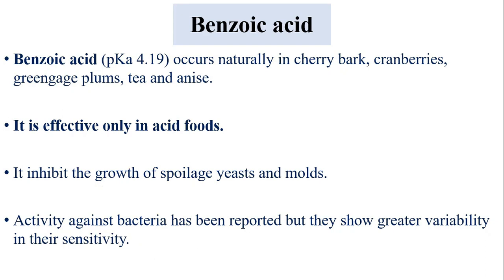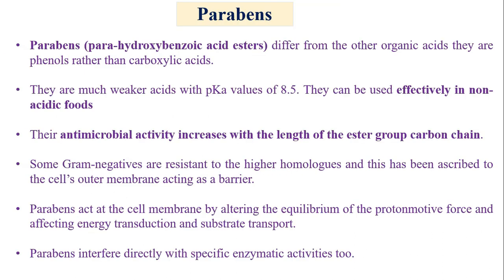Benzoic acid (E210) occurs naturally in cherry bark, cranberries, greengage plums, tea, and anise. It has a pKa of 4.19 and is effective only in acid foods. It inhibits the growth of spoilage yeasts and molds. Activity against bacteria has been reported, but bacteria show greater variability in their response compared to yeasts and molds.